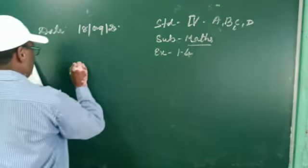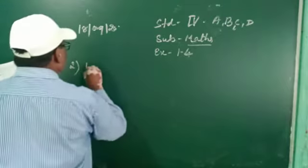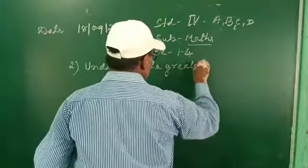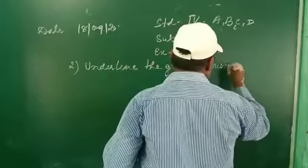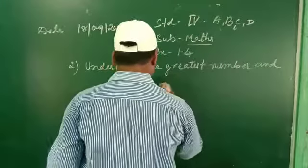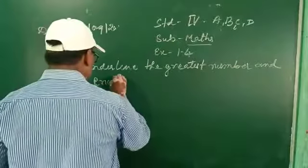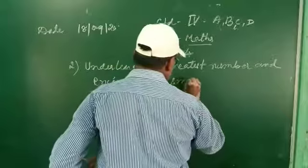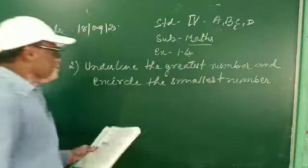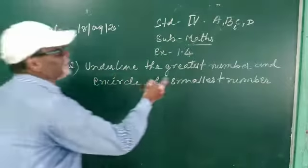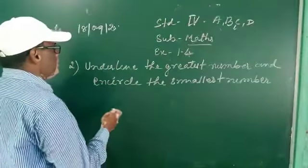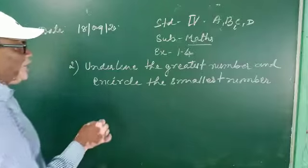Next, look at the second portion. Here, you underline the greatest number and circle the smallest number. Underline the greatest number and insert — circle — the smallest number. So: which is the greater number, you underline it; which is the smallest number, you circle it.